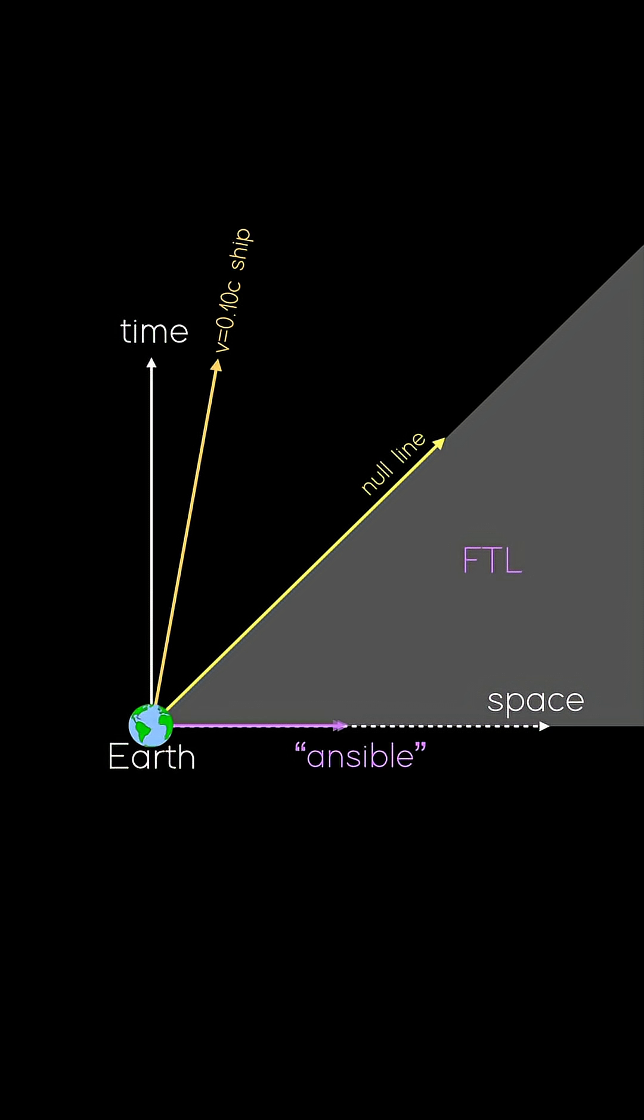Perhaps the most extreme case is something that is ansible, which means instantaneous. It takes zero time to move a given distance here, and thus it follows a horizontal line. Note how ansible world lines are always parallel to the sender's space axis, which is here at the Earth.